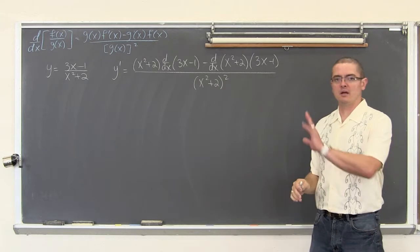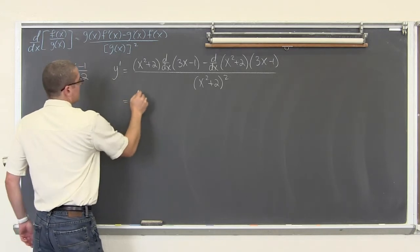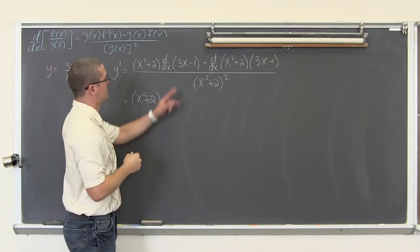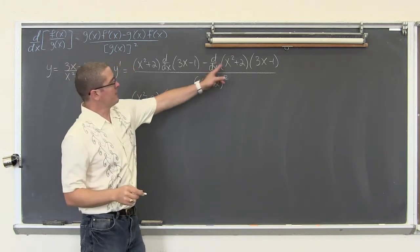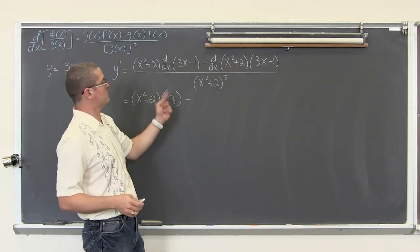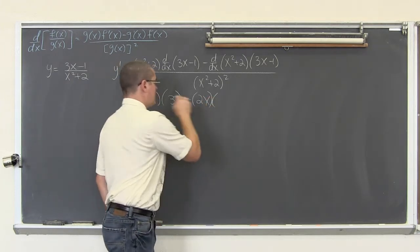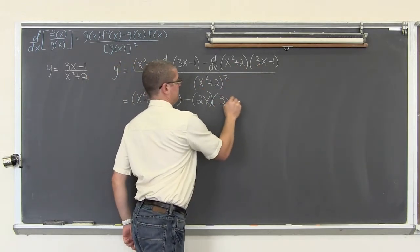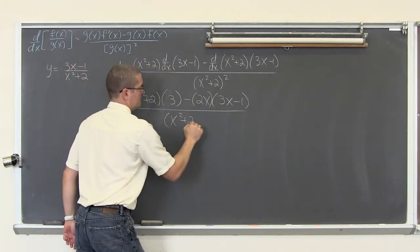Don't worry about multiplying that out. Leaving it — the binomial squared is perfectly fine. We have x squared plus 2. The derivative of 3x minus 1 is equal to 3, minus the derivative of x squared plus 2 using the power rule, which gives us 2x, times 3x minus 1, all over that binomial squared.